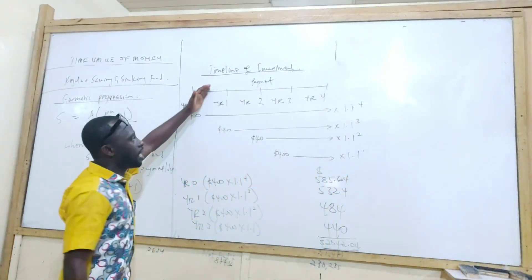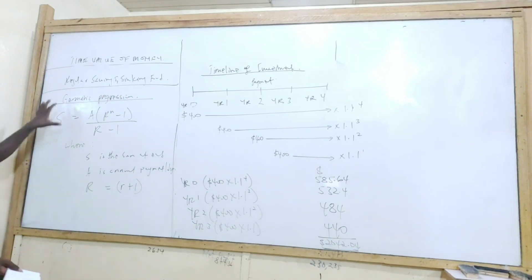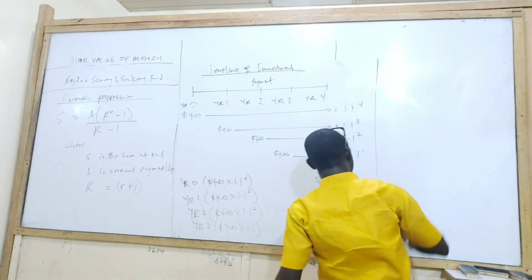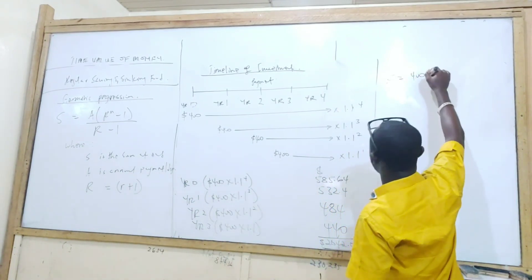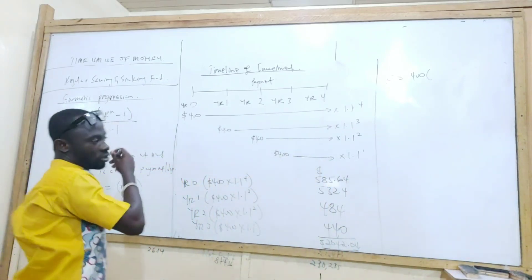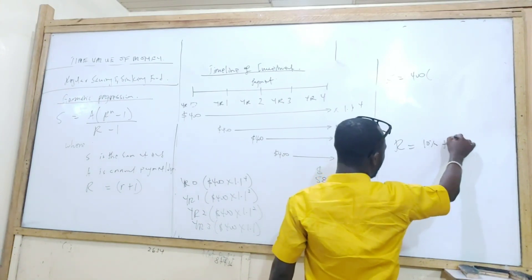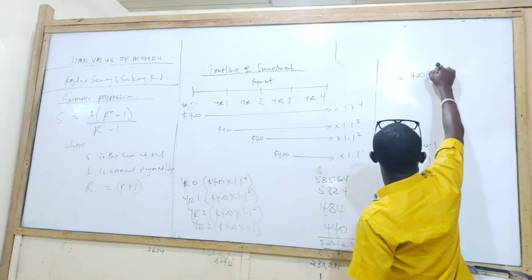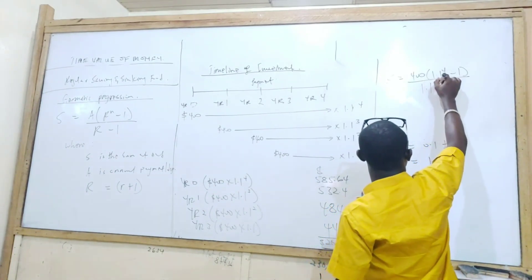If this payment for Lekki was made at the end of the year and we are using this formula, then A equals the annual installment of $400. Remember R equals small r plus 1, so that would be 10% plus 1 = 1.1. So it's going to be: S = 400 × (1.1^4 - 1) / (1.1 - 1).